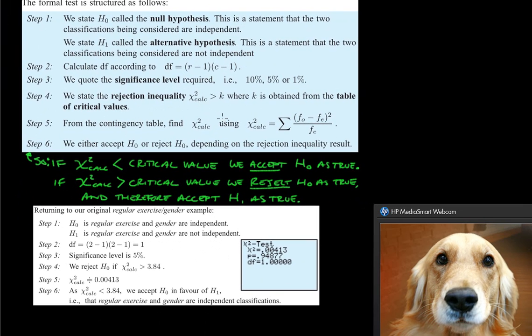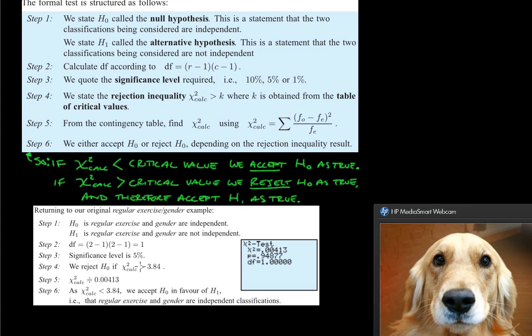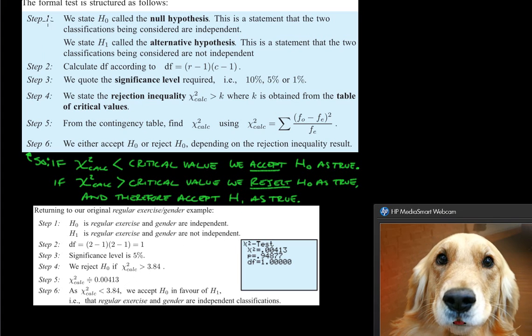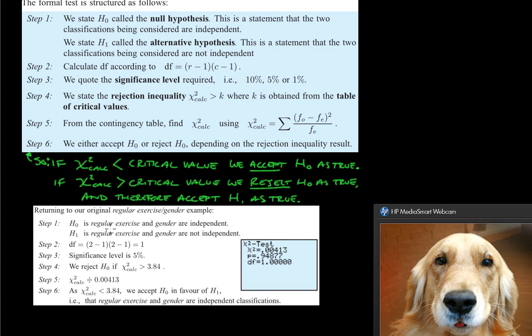Here's where we are going to look back at the information that we used in the first video that we did. We were talking about regular exercise and gender, if they're independent or not. So the six steps that we could have done on that test: first step is the null hypothesis. The null hypothesis is regular exercise and gender are independent. So then the rejection of that, or the alternative hypothesis, would be regular exercise and gender are not independent. So that's the first step.